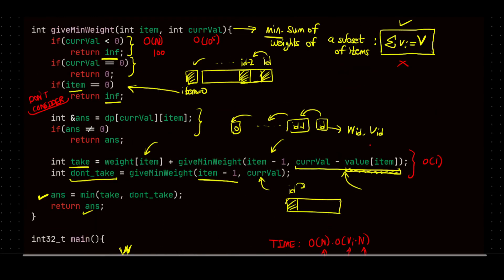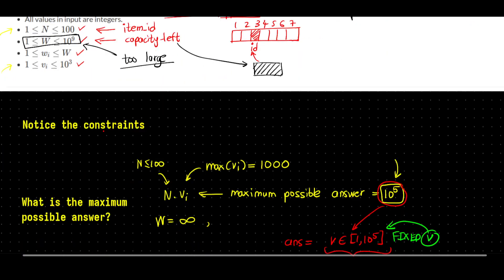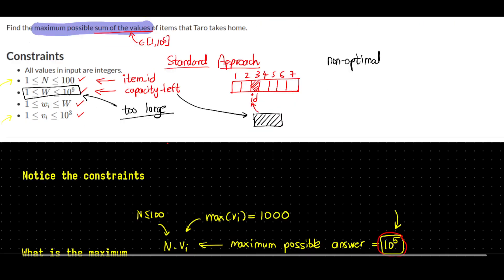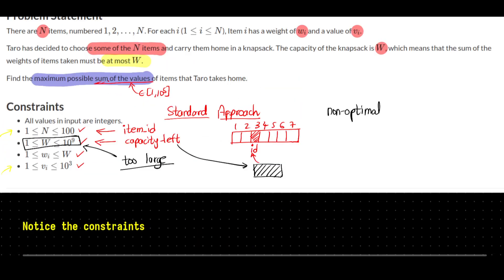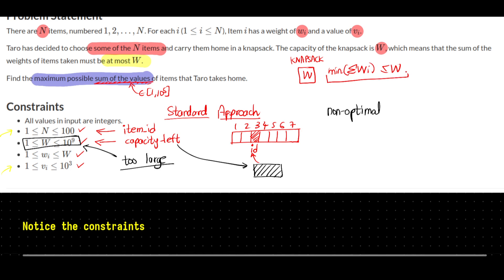So that is it about this video. The main idea was to look at the constraints and reverse the problem — instead of directly finding the maximum sum of values, we iterated over all possible values in the possible range of answers and searched for a subset with that particular sum of values. Since the subset was also bounded by the knapsack capacity, we found the minimum weight subset so that it is less than or equal to W. If you found this useful or have any doubts or suggestions, let me know in the comments. Thank you.